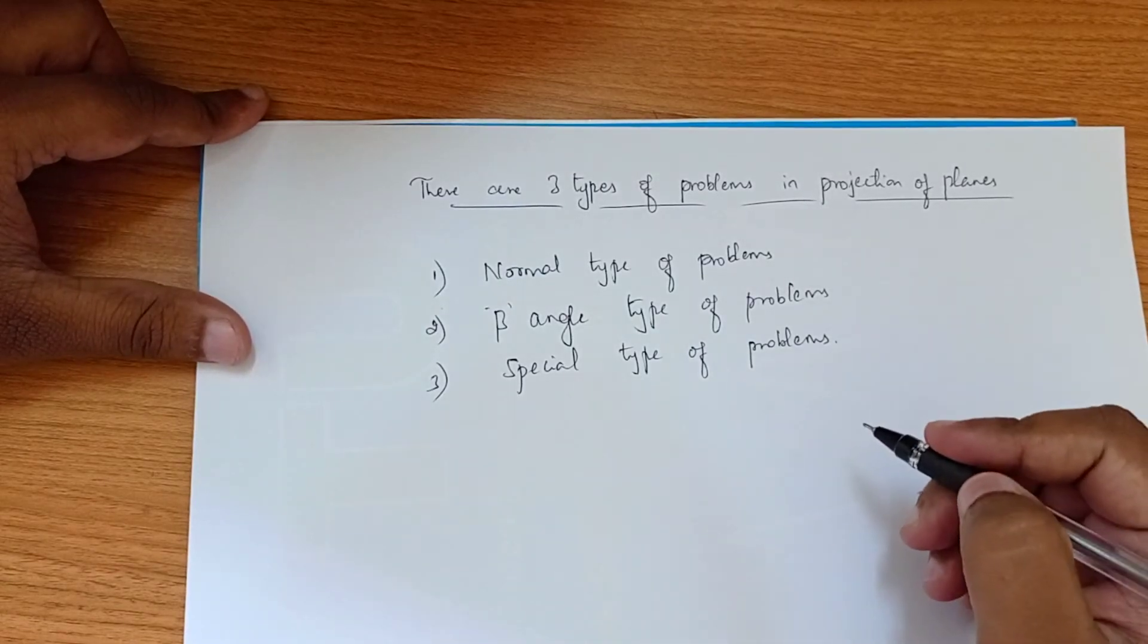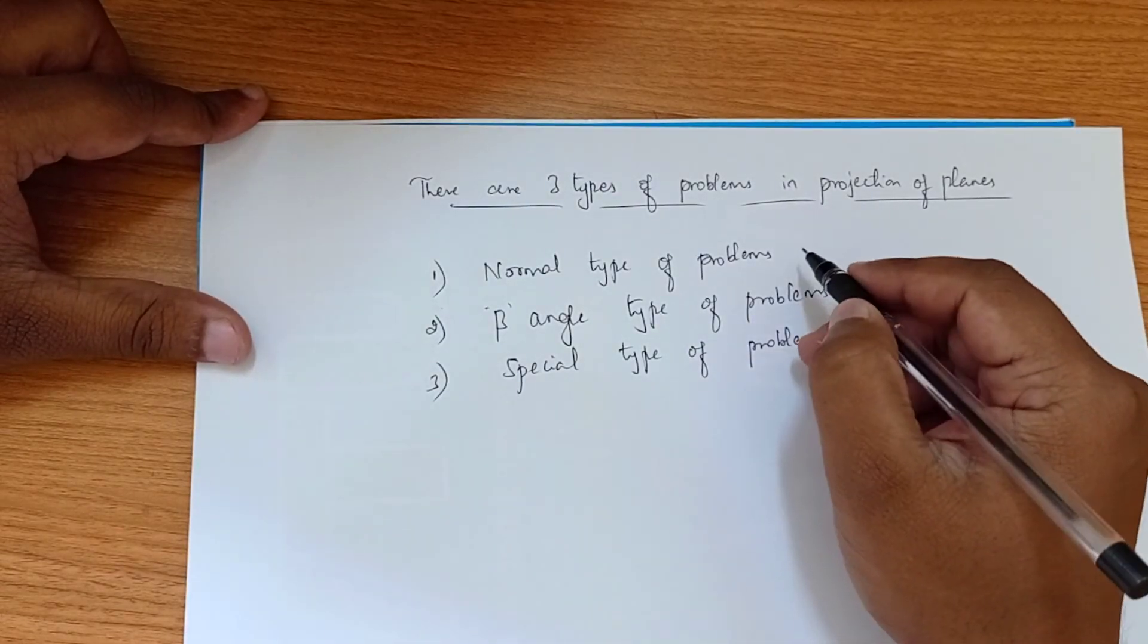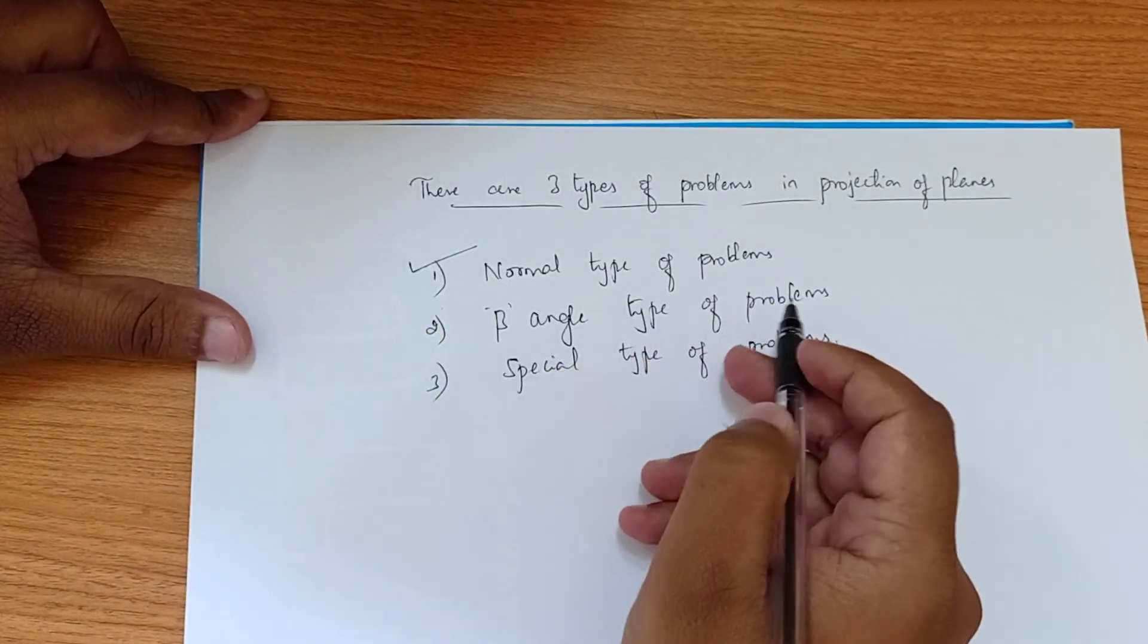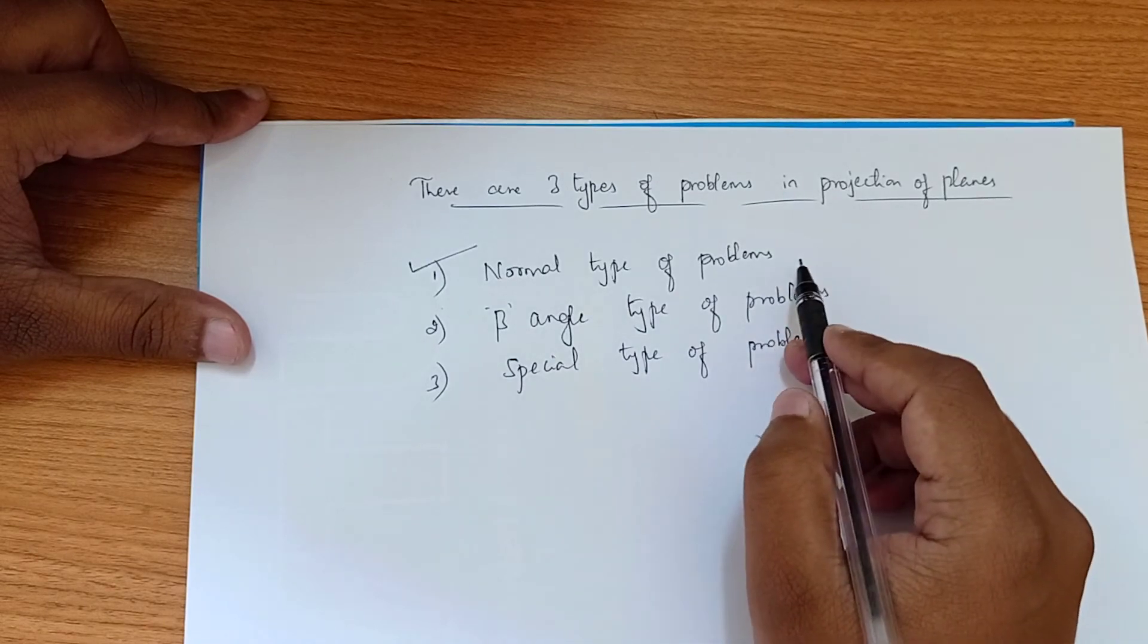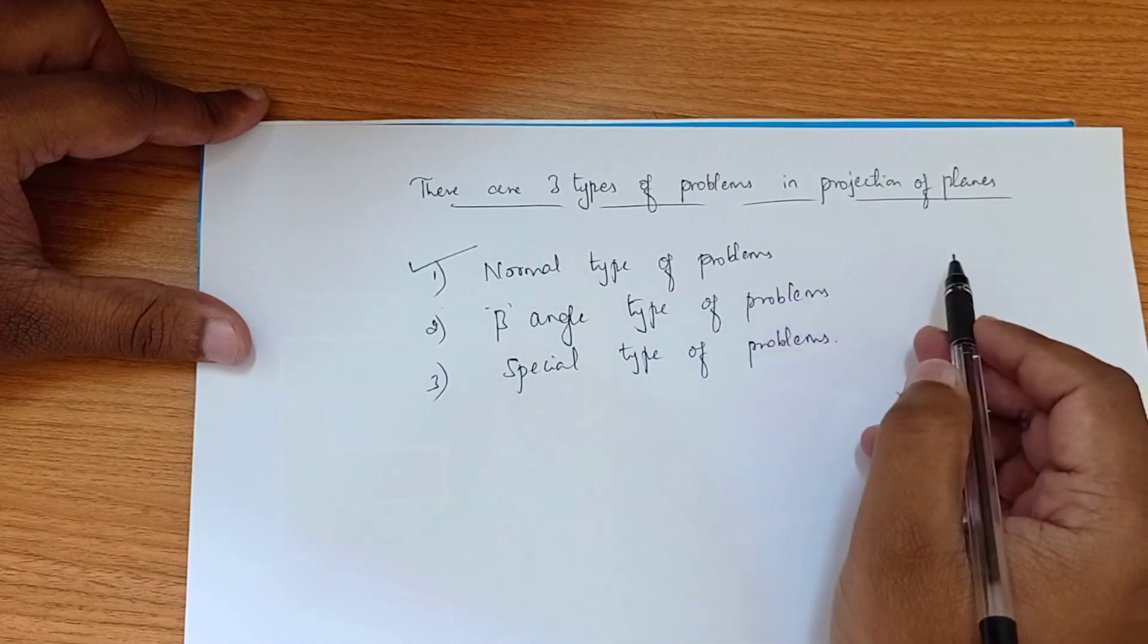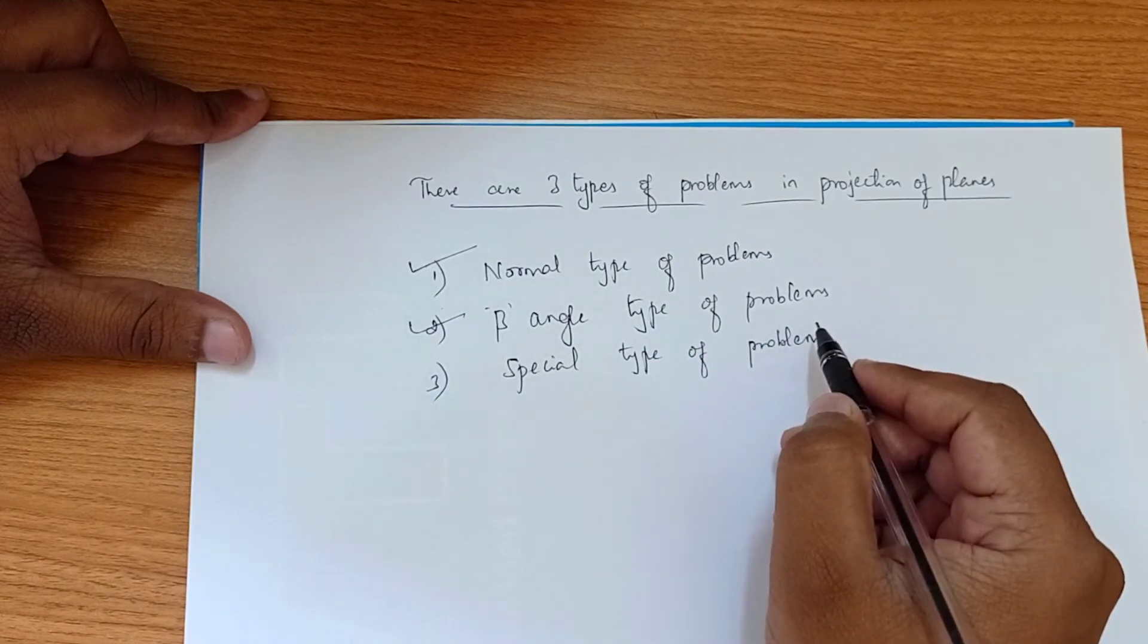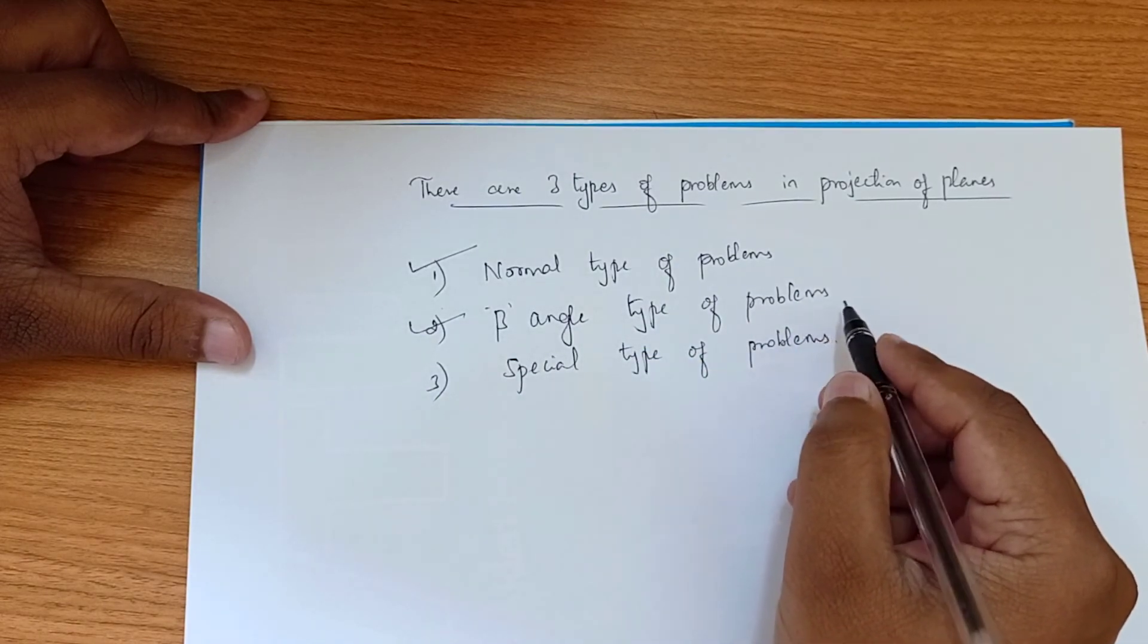Individually we are going to deal with each. First, we will start with the normal type of problem. After completing the normal type of problems in triangle, square, pentagon, hexagon, and circle, we will move to the beta angle type of problems.